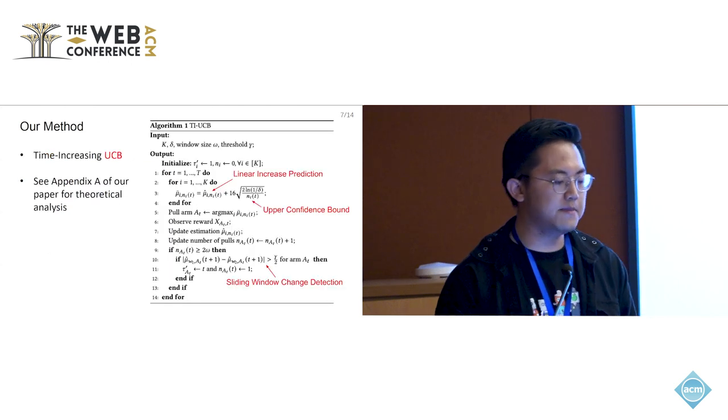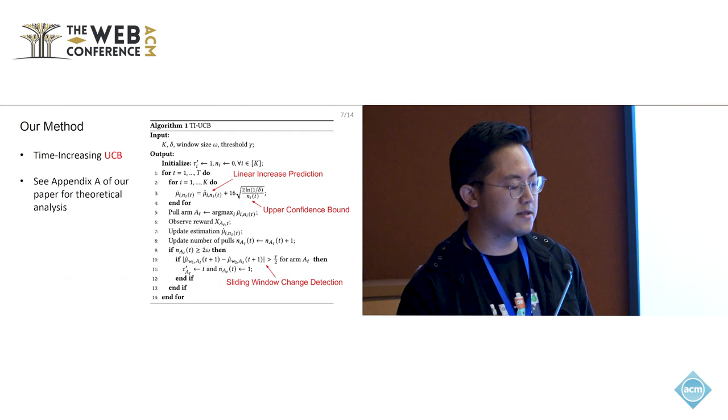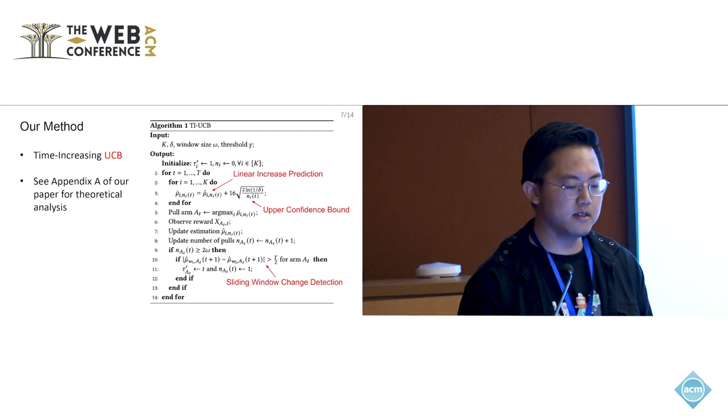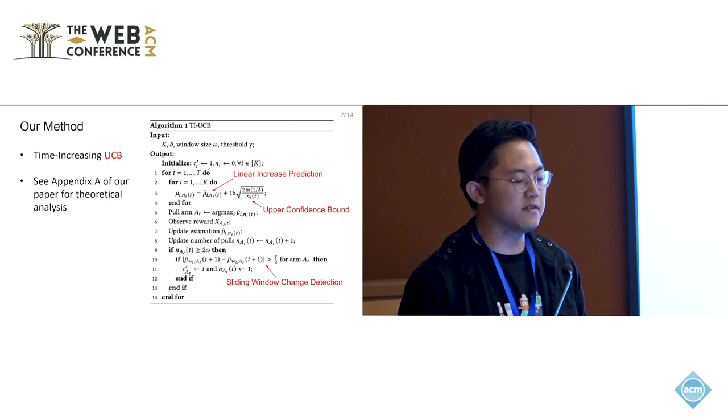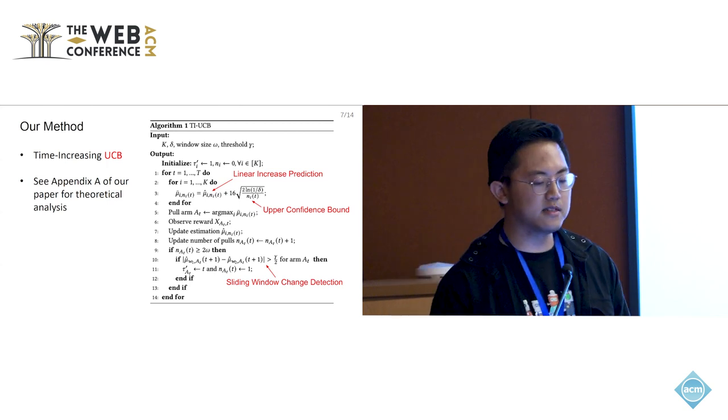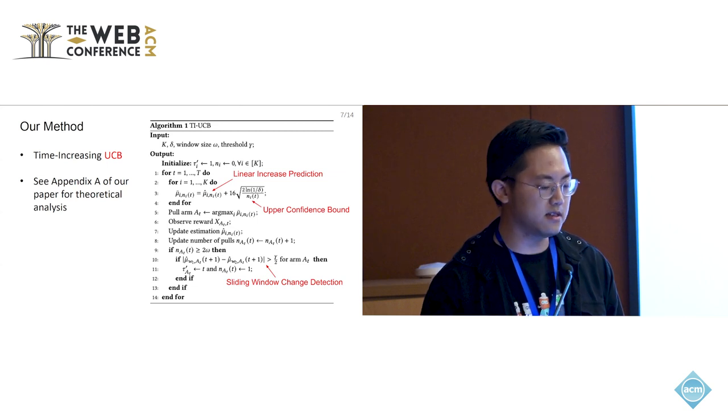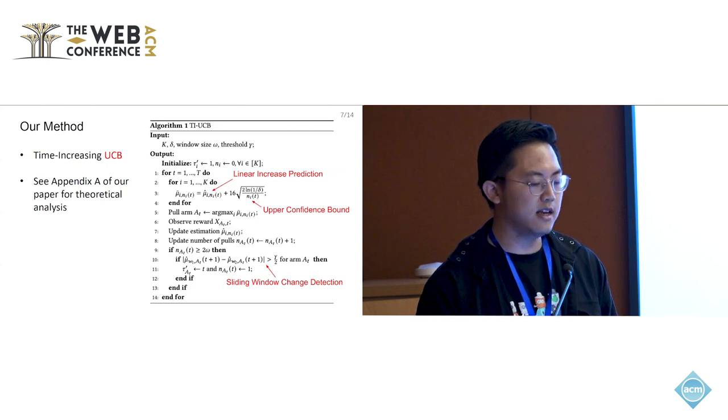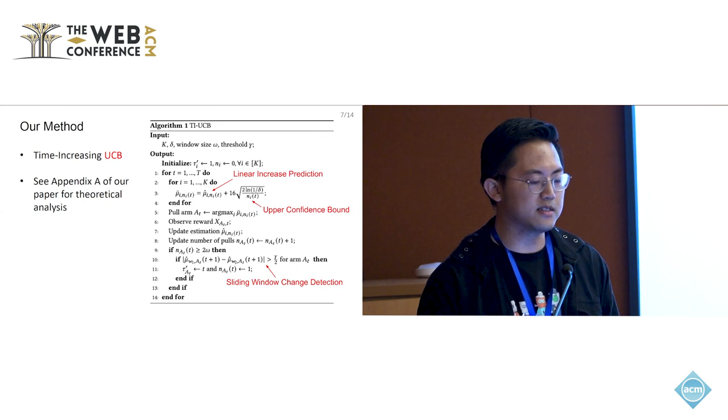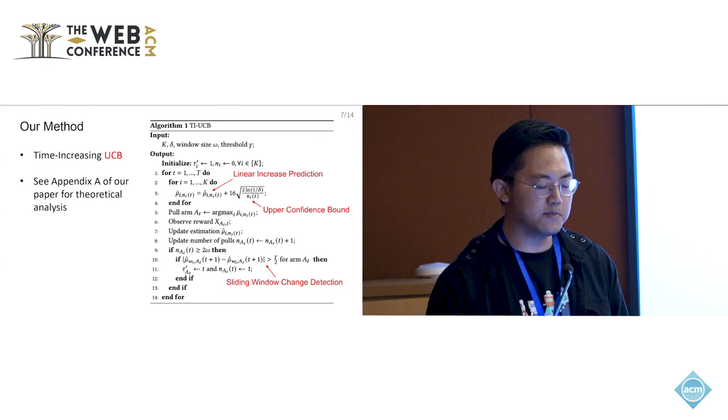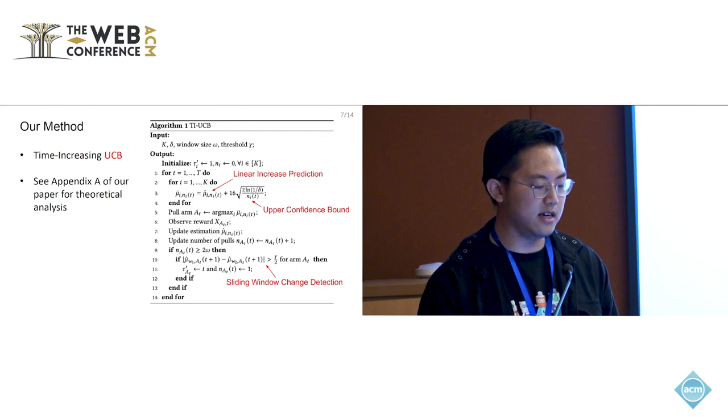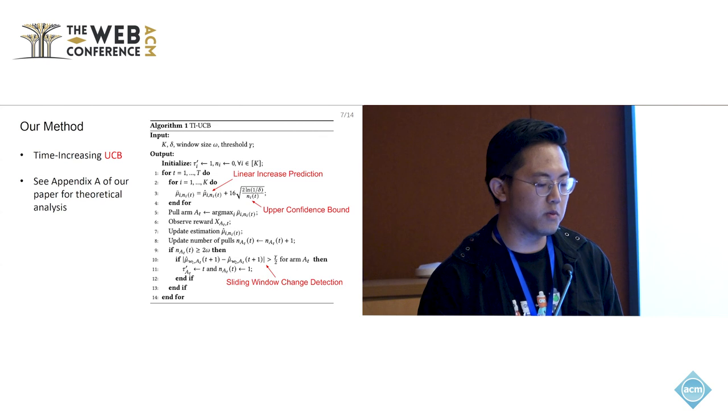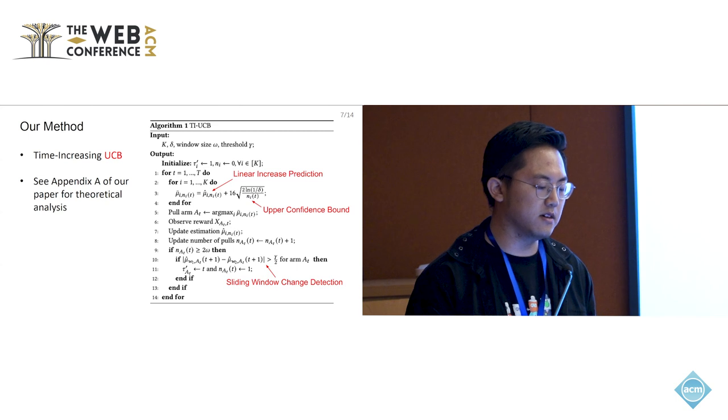We propose our time-increasing upper-confidence bounds algorithm. In our algorithm, the first step is, given a batch of data samples, we first predict all model performances after being trained on this batch of data. Then we use this prediction added with the upper-confidence bounds value, and we select the arm that we like to pull at this current stage. Then we observe the rewards of the current arm pulled, and then we update the estimations of this arm.